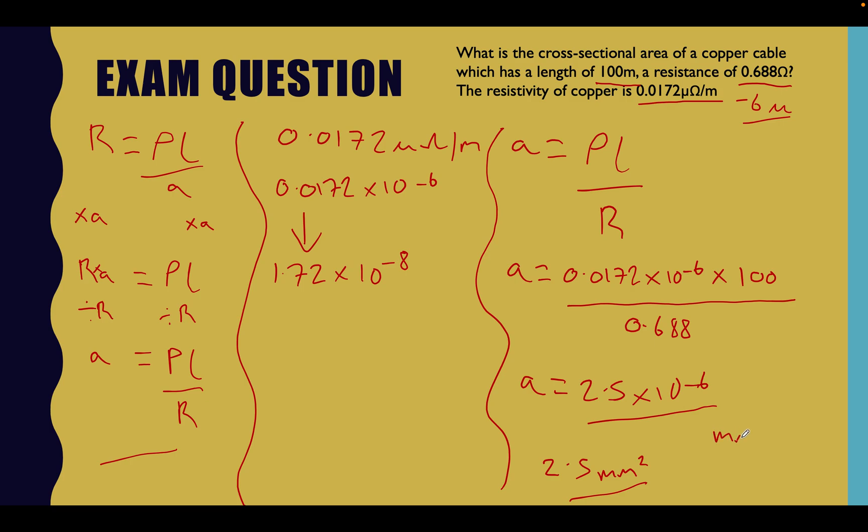Anything millimeters squared is going to be equal to times 10 to the minus 6. We've said this over and over again. So when you see this written on your calculator, 2.5 times 10 to the minus 6, it's saying that the CSA of that cable is 2.5 millimeters squared.